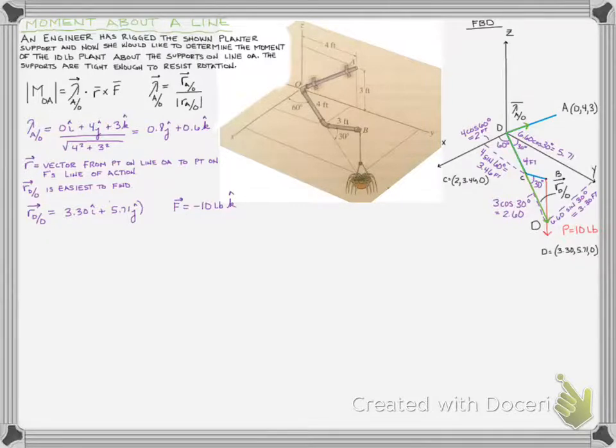All right, now that we have our lambda, our position vector from a point on the line to a point on our force's line of action, and we know our force, we can now write out what the actual magnitude of the moment is going to be. And for those of you that saw it, yes, I know I put pounds for the position vector, we'll go back and correct that in just a second.